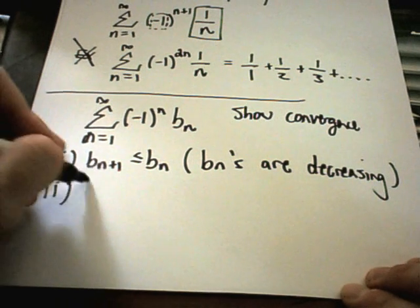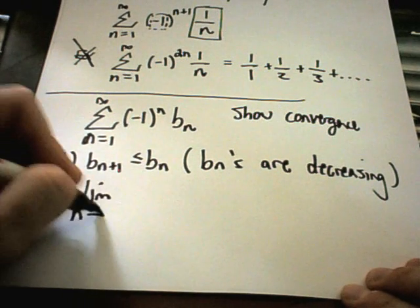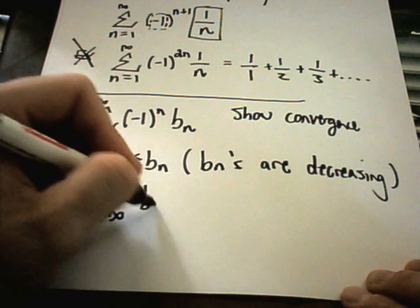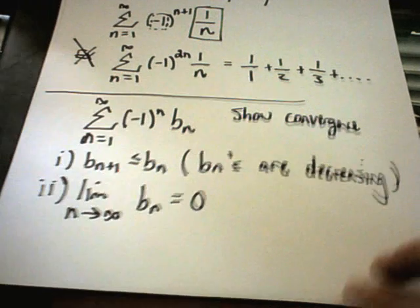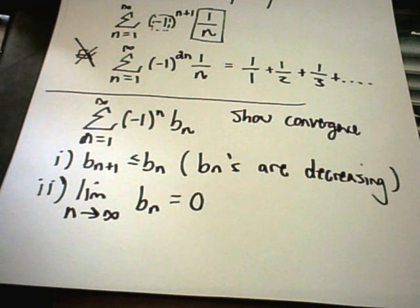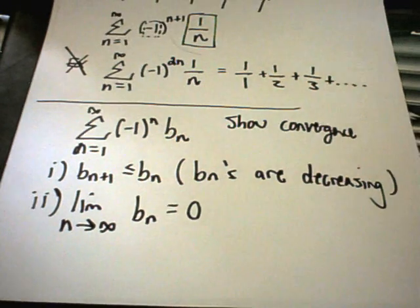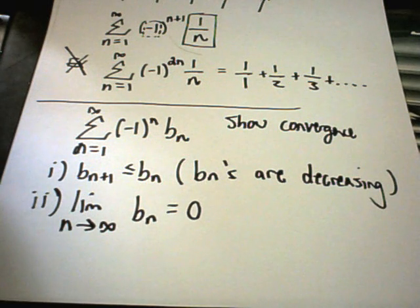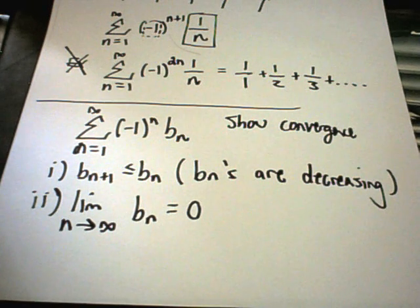The other thing you have to show is the limit as n goes to infinity of the b sub n's equal 0. And if that happens, then you have an alternating series that's going to converge. If not, well, then it's going to diverge.